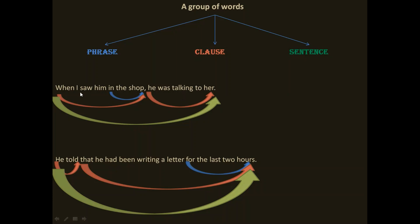Now if we read the sentence from beginning to the end, the sentence has got a subject and a predicate. This sentence has got two clauses: 'when I saw him in the shop' and 'he was talking to her.' So this whole, from here to here, is a sentence.